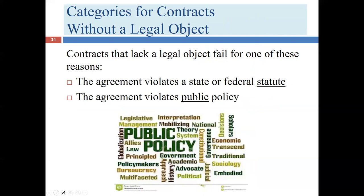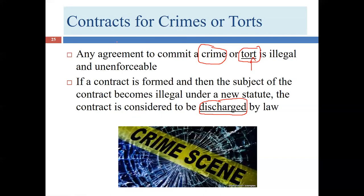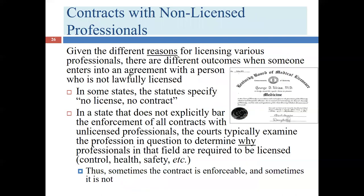We've talked about the first category — state and federal statutes — that can cause problems. We've talked about crimes (most are state laws, though there are federal crimes like treason, federal income tax evasion, and espionage) and we've talked about torts. Let's look at another category: contracts with unlicensed professionals. This is a relatively subtle area with lots of different moving pieces.